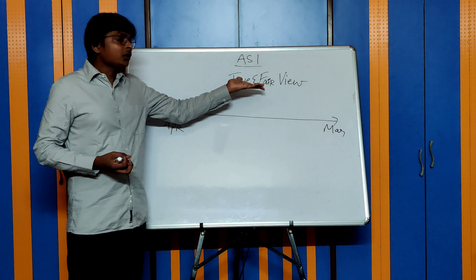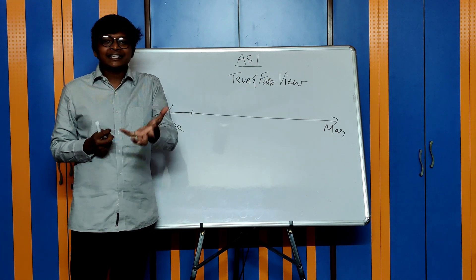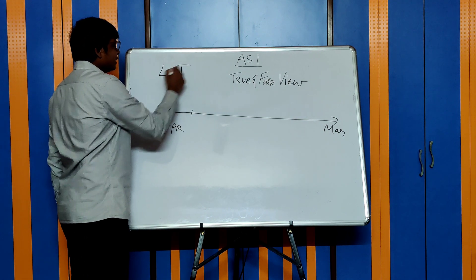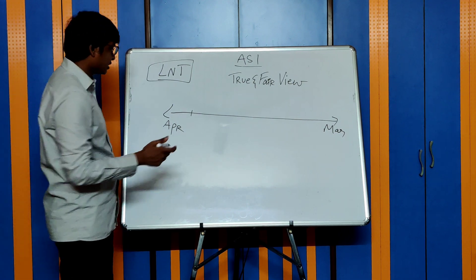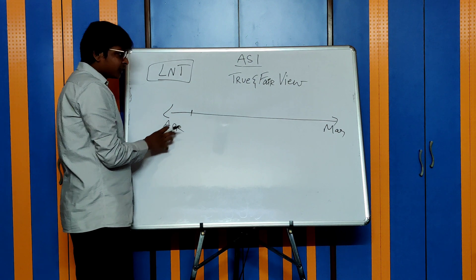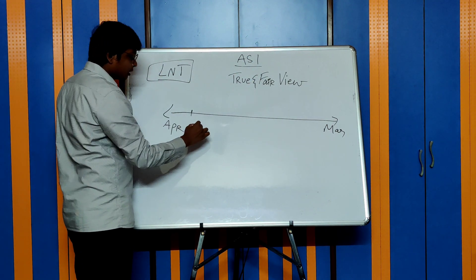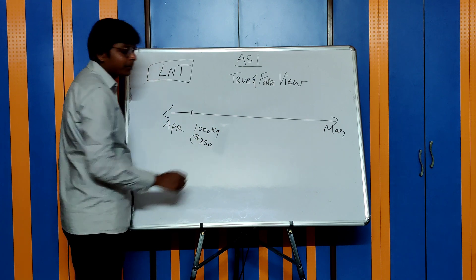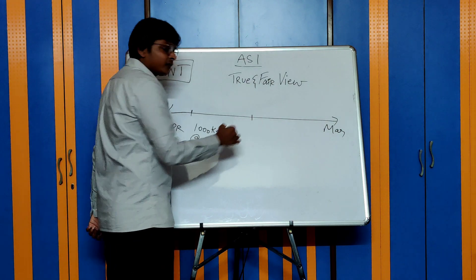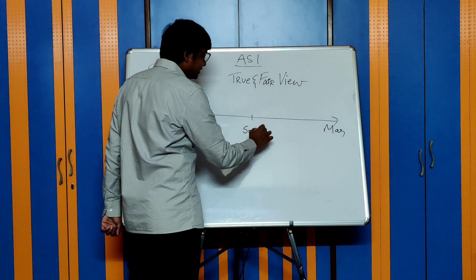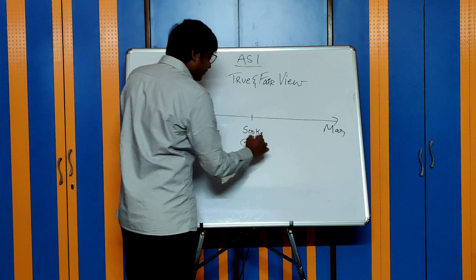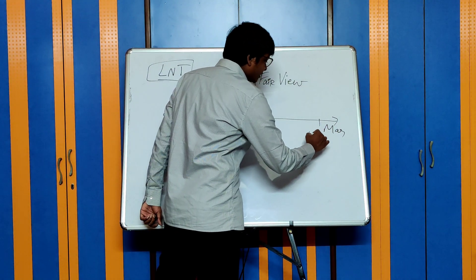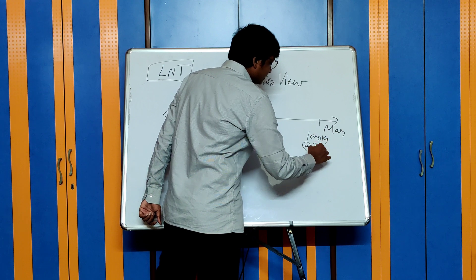Let us discuss what is true and fair view and how it helps in selecting an accounting policy. Assume you are L&P and one of the raw materials you purchase is cement for construction. At the beginning of the year you purchased 1,000 kgs of cement at ₹250 per kg. In the middle of the year you purchased another 500 kgs at ₹275 per kg, and towards the end of the year another 1,000 kgs at ₹300 per kg.